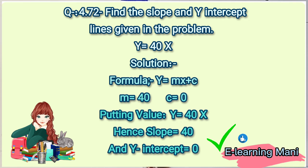But y-intercept is not given, so c = 0. Putting the values, Y = 40X. Hence, slope is 40 and y-intercept is 0. So here is the answer. Thanks for watching. The remaining questions will be in my next videos.